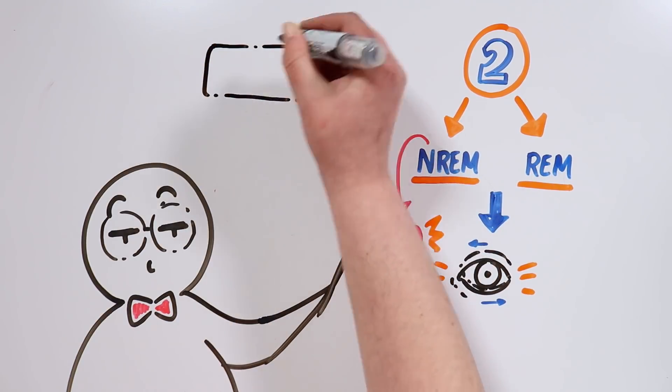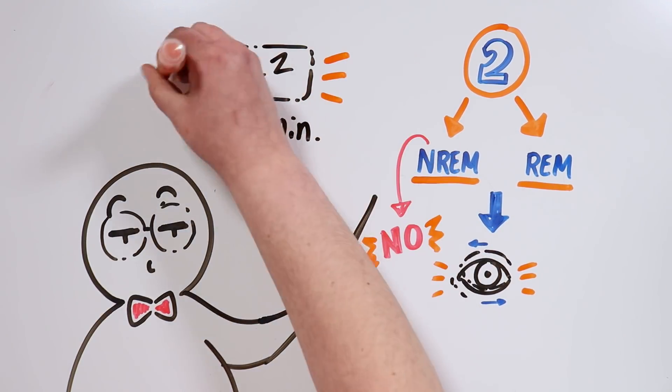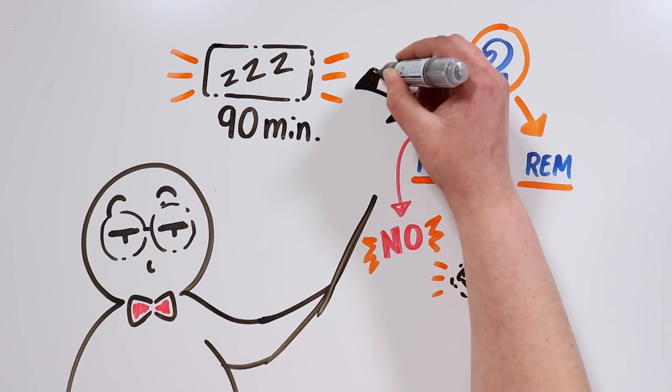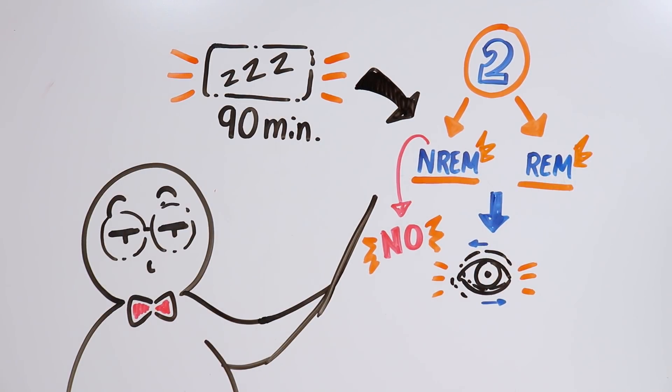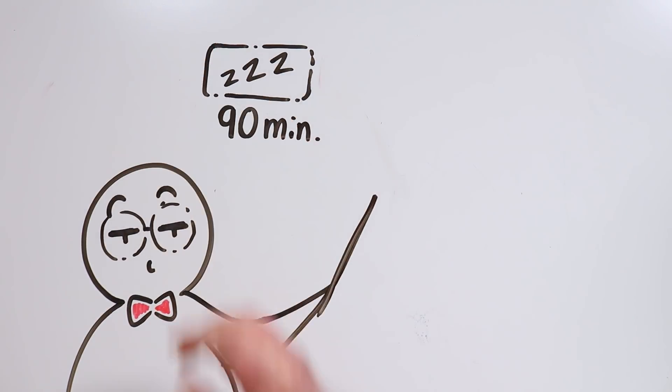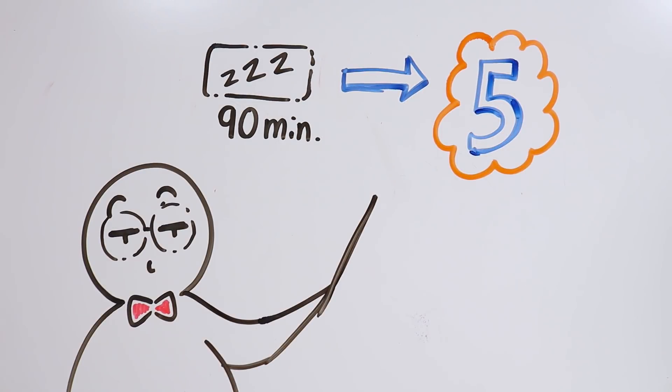At the same time, our sleep is divided in 90-minute cycles where the NREM and REM phases alternate. About 5 cycles take place in an average night of sleep.